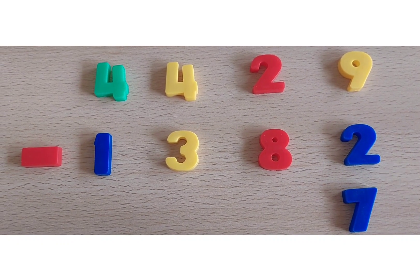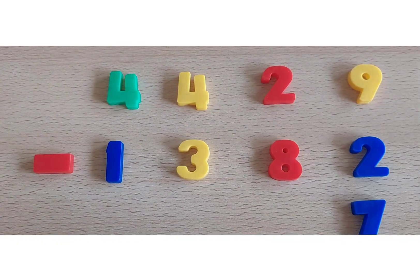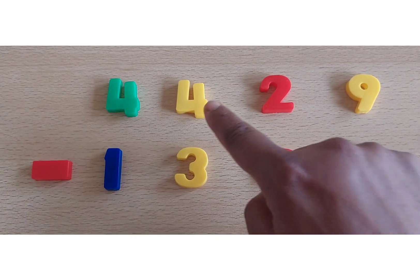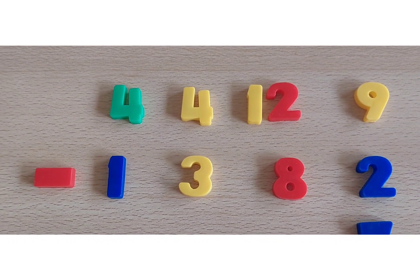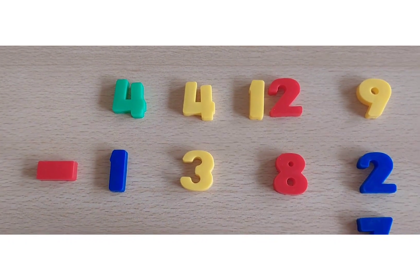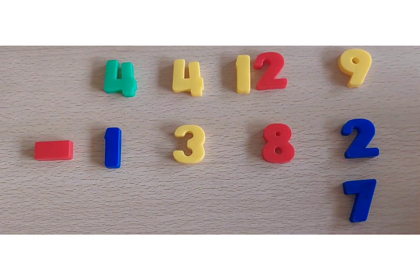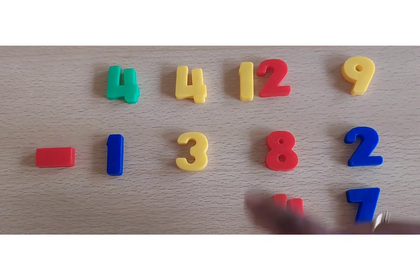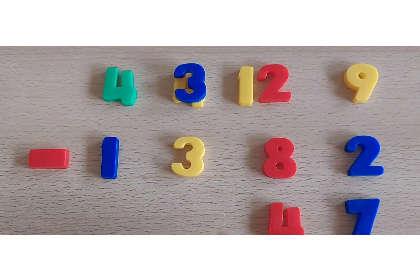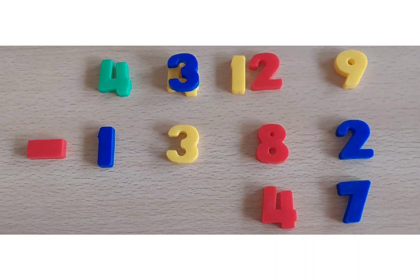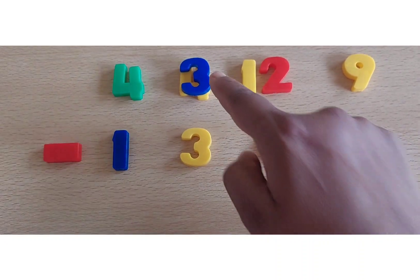So we are going to follow this one. This four will give one to this two, so it will become twelve. Now we can subtract easily. Twelve minus eight will give us four. And here only three is left because it is four and one is gone. So it is only three now.